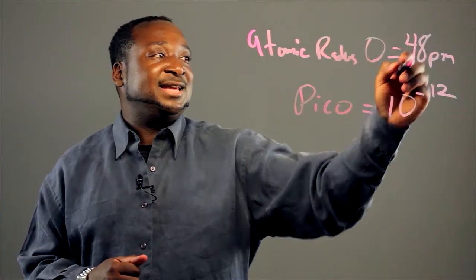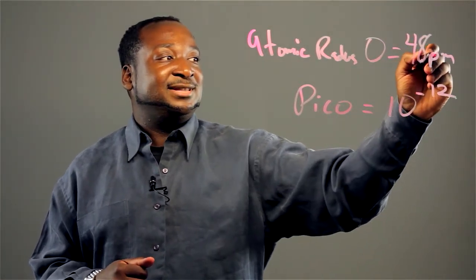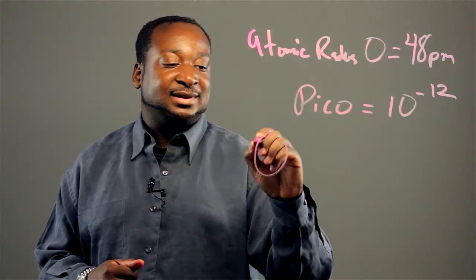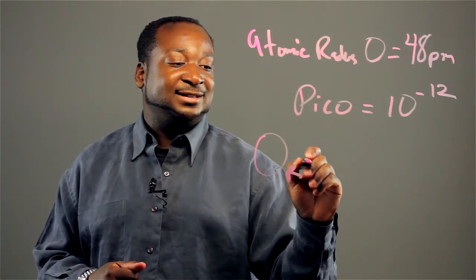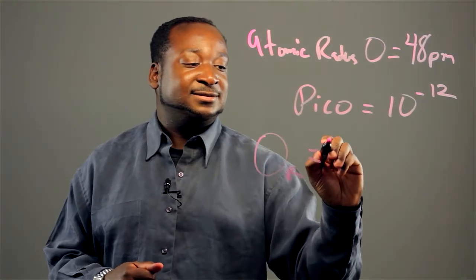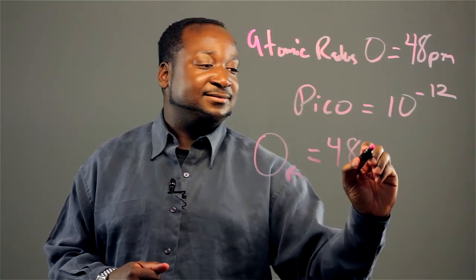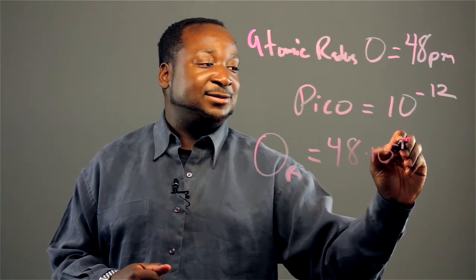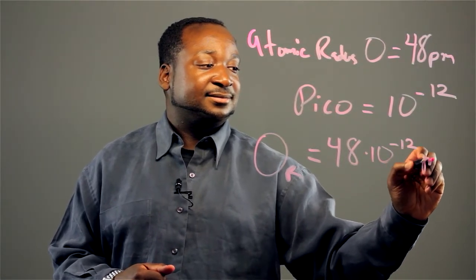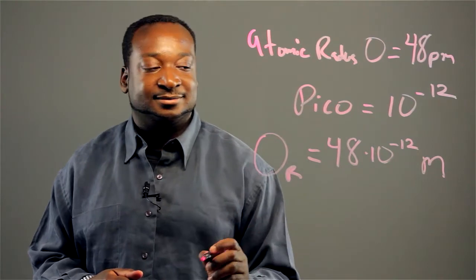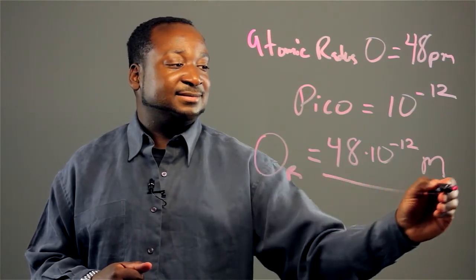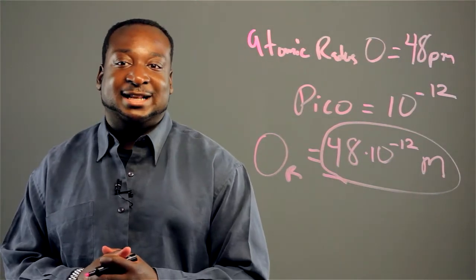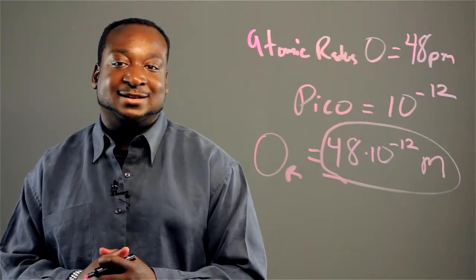And when we plug that into this number here, we get oxygen — its radius is equivalent to 48 times 10 to the negative 12 meters. Here it is. This is a very small number, and that's the atomic radius of oxygen.